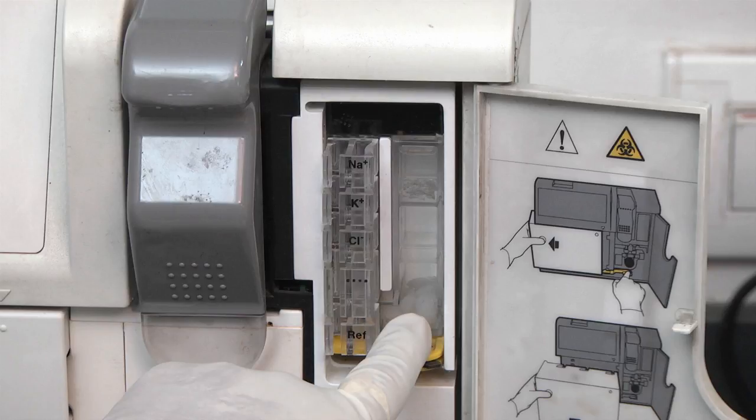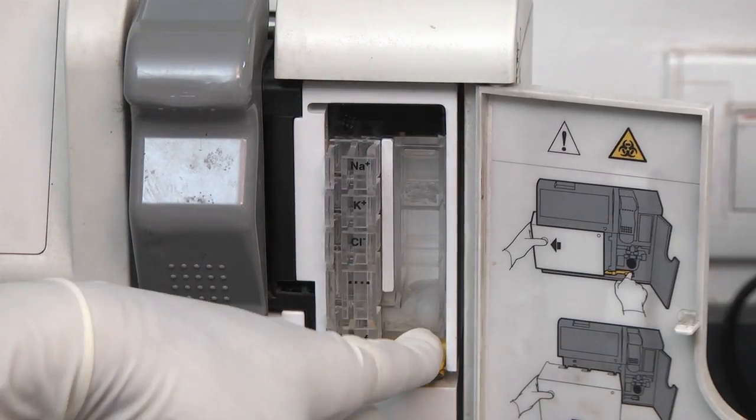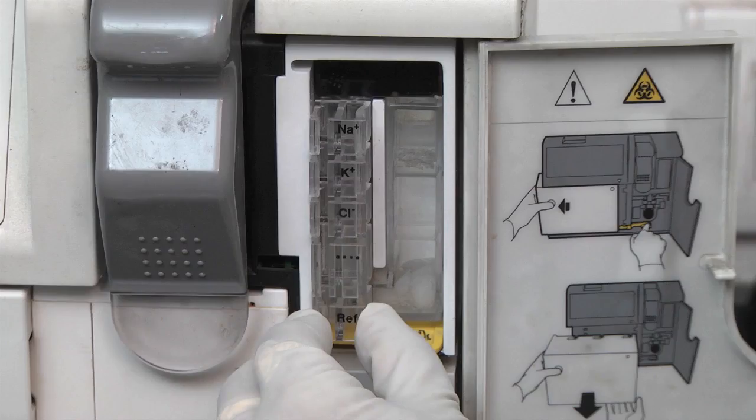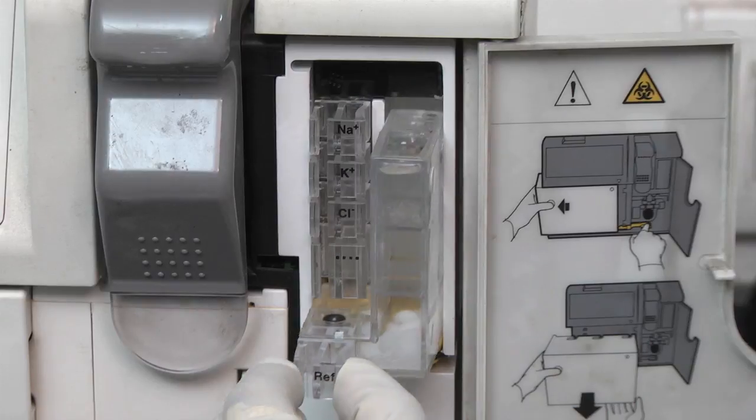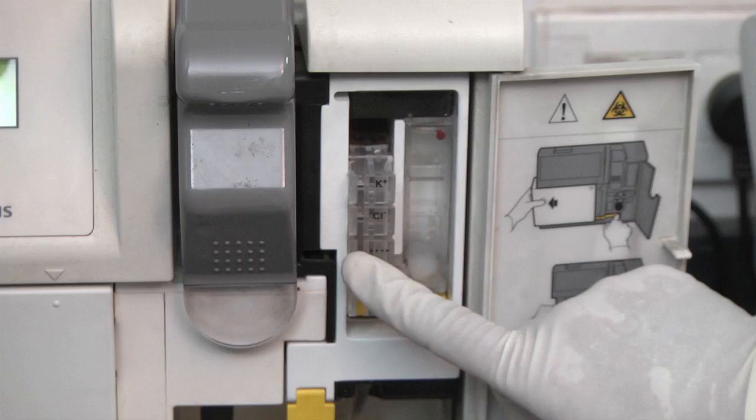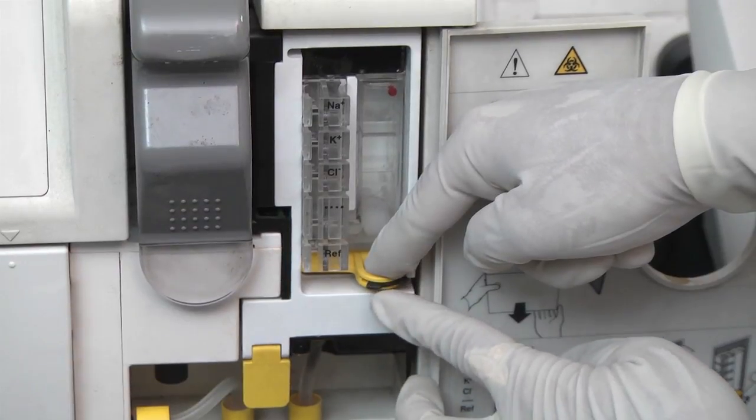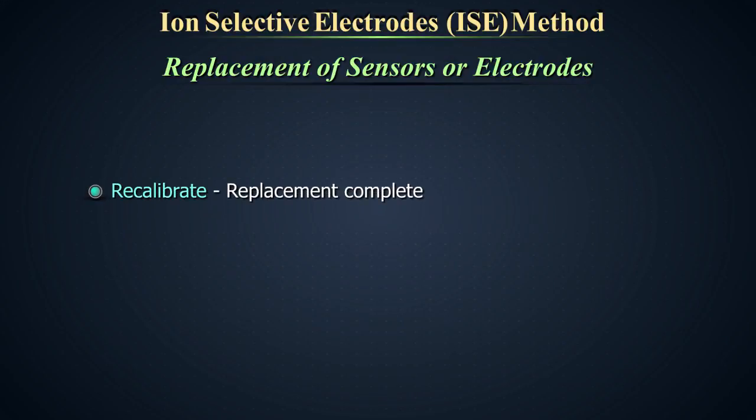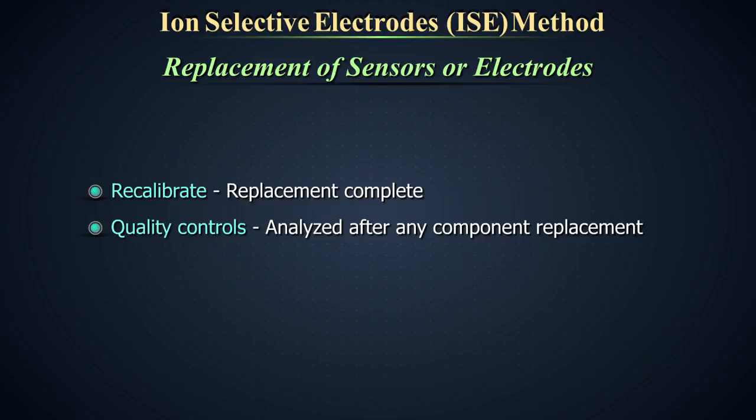To remove a sensor, push the compression plate down until the latch locks into the open position. Grip the desired sensor handle, squeeze and pull it straight out from the sensor module. To install a new sensor, push the sensor gently into its designated slot till the handle snaps into the sensor module. Do not force. Recalibrate when replacement is complete. Quality controls should be analyzed after any component replacement.